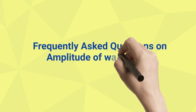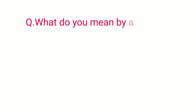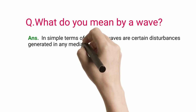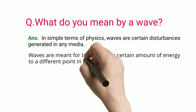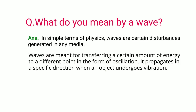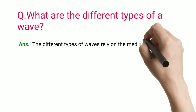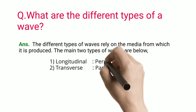Frequently Asked Questions on Amplitude of Wave. What do you mean by a wave? In simple terms of physics, waves are certain disturbances generated in any media. Waves are meant for transferring a certain amount of energy to a different point in the form of oscillation. It propagates in a specific direction when an object undergoes vibration. What are the different types of a wave? The different types of waves rely on the media from which they are produced. The main two types of waves are: longitudinal (perpendicular) and transverse (parallel).